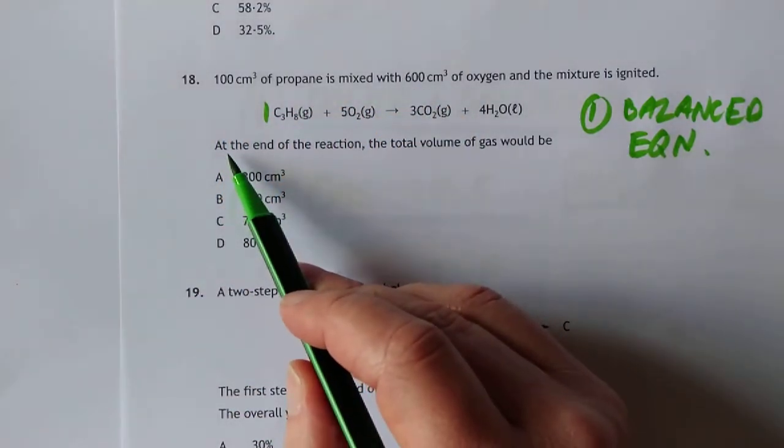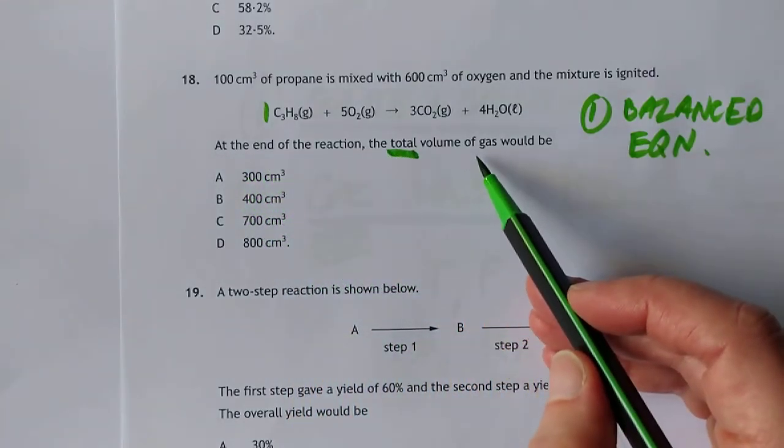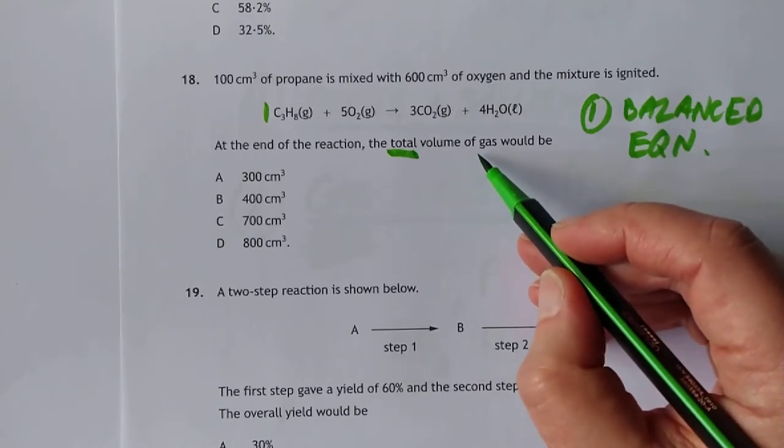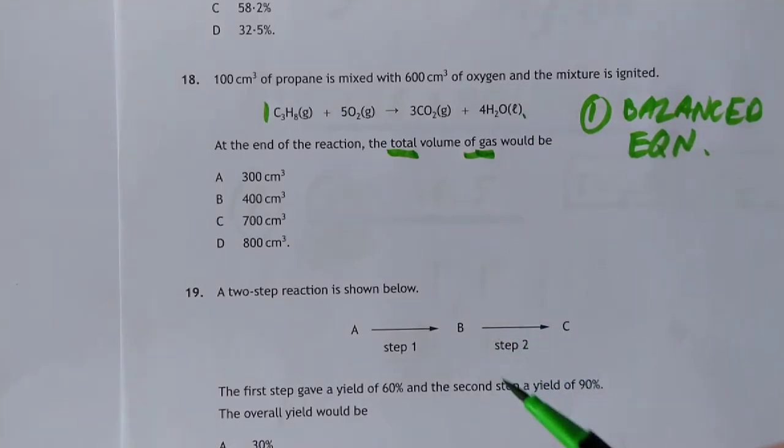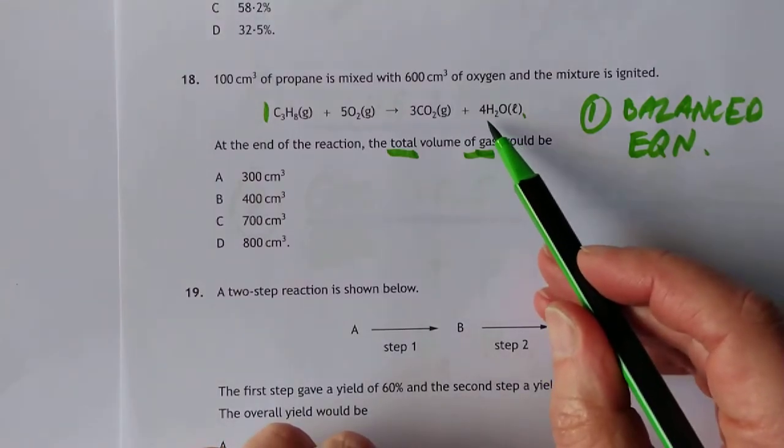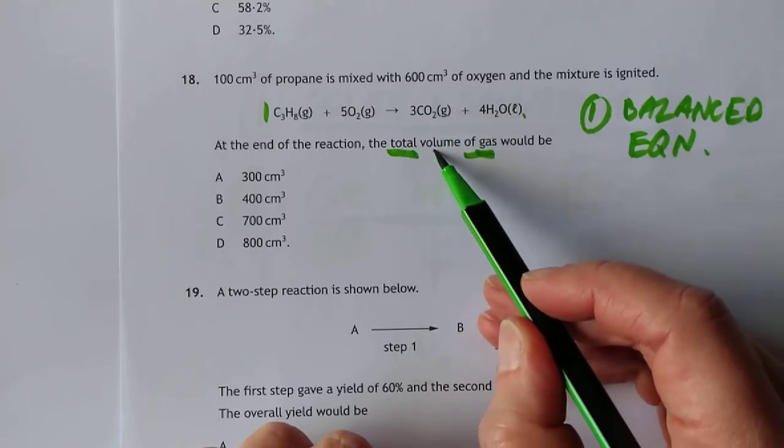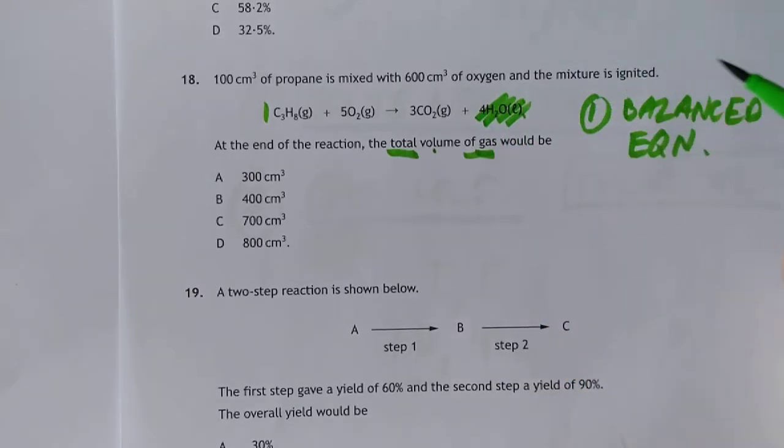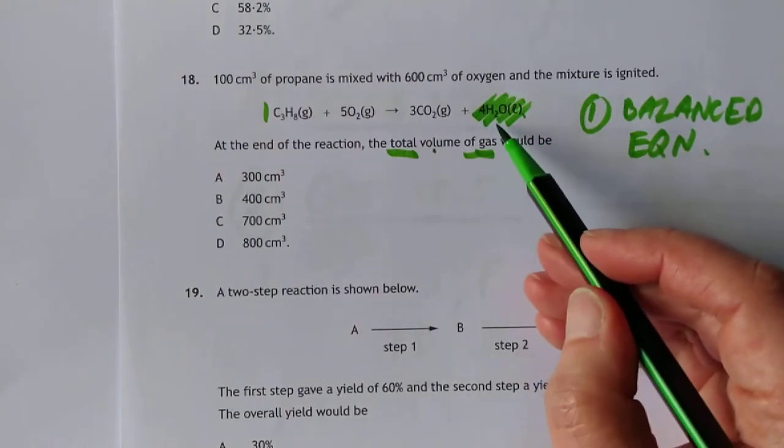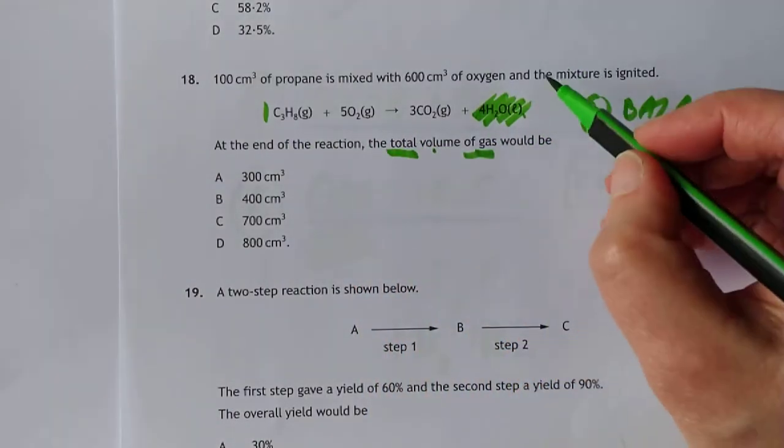The question is asking, at the end of the reaction, the total volume of the gas would be... The volume of liquids compared to the volume of gases are inconsequential. We can scrub the liquids entirely. The volume of that liquid will be so small compared to the volume of the gases, we can call it zilch.